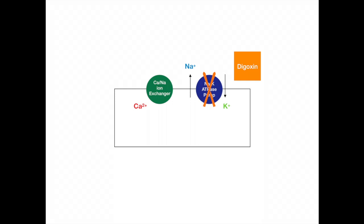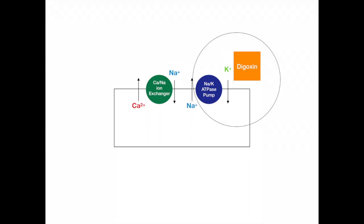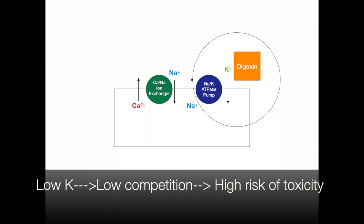Digoxin increases contractility by inhibiting this pump. Potassium cannot go in, so sodium can't go out. Ultimately, sodium is not available for the ion exchanger to function, so more calcium is available inside the cell. Digoxin competes with potassium to bind to this pump. When there is hypokalemia, digoxin does not have to compete, so there is a higher chance of digoxin toxicity.